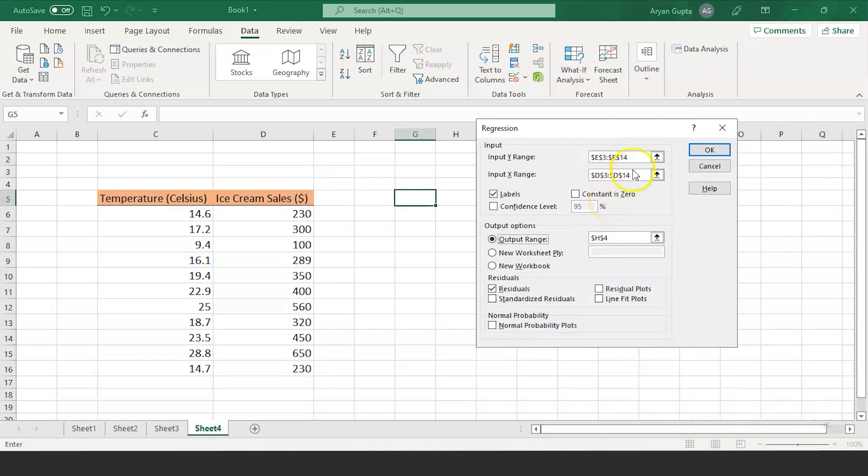We will get this table. Select the y range as the ice cream sales. This y range is predictable variable, also called as dependent variable. For the input x range, we will select the temperature in degree Celsius. This is the explanatory variable, also called as the independent variable.